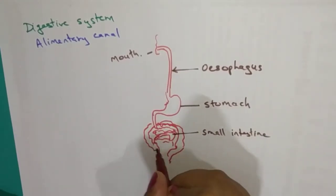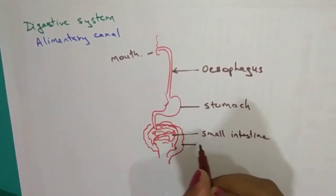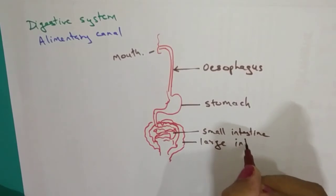And the surrounding part, that is also coiled and that is called as large intestine.